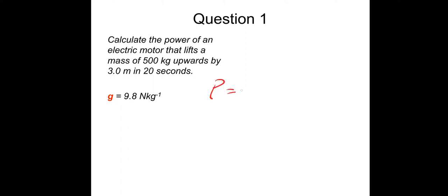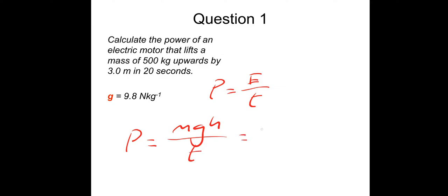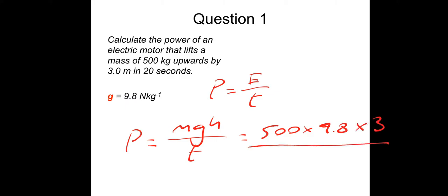Power equals energy, or work done, over time. This motor is lifting a mass, so the energy gained is gravitational potential energy. So power equals MGH divided by time T. Putting the numbers in: 500 kilograms multiplied by 9.8, multiplied by the height of 3 meters, divided by the time of 20 seconds. The answer is 735 watts, or joules per second.